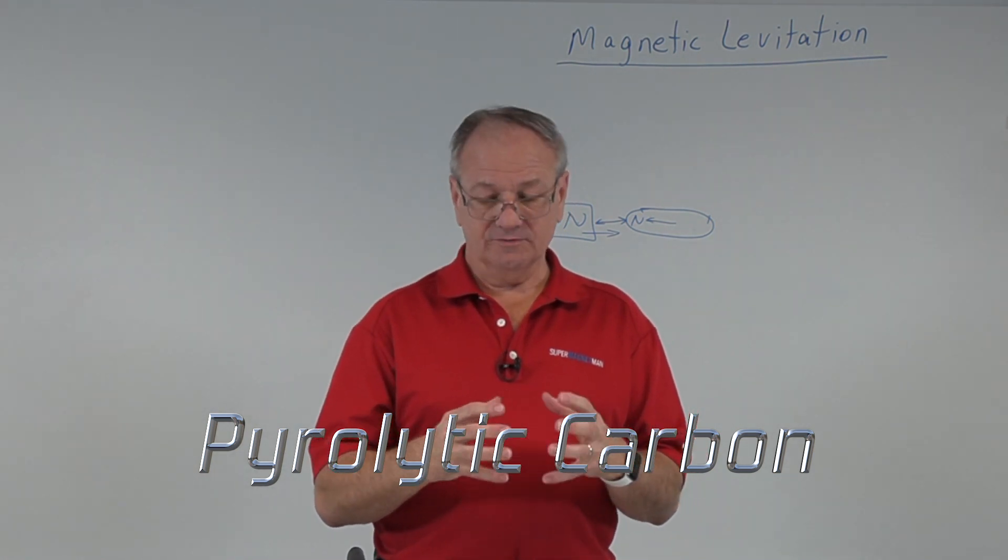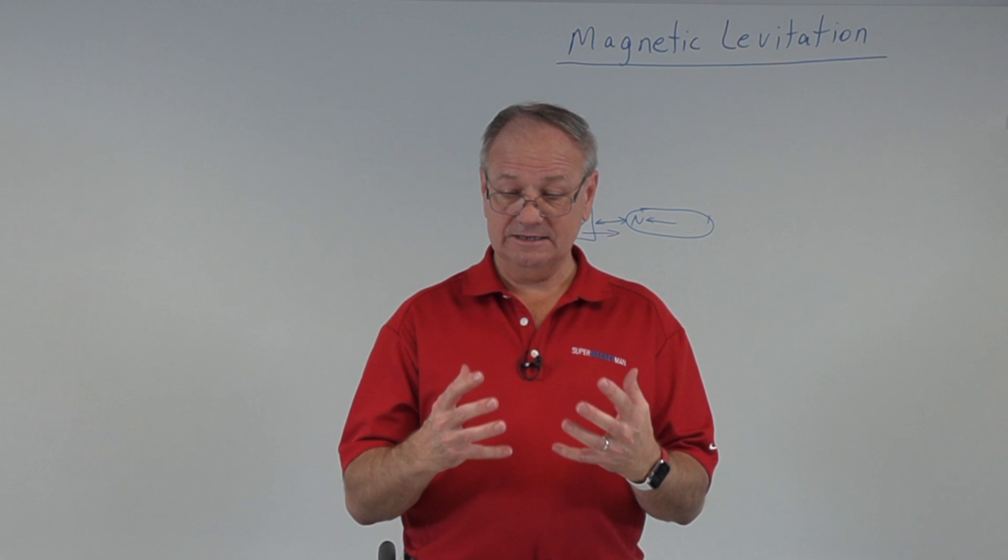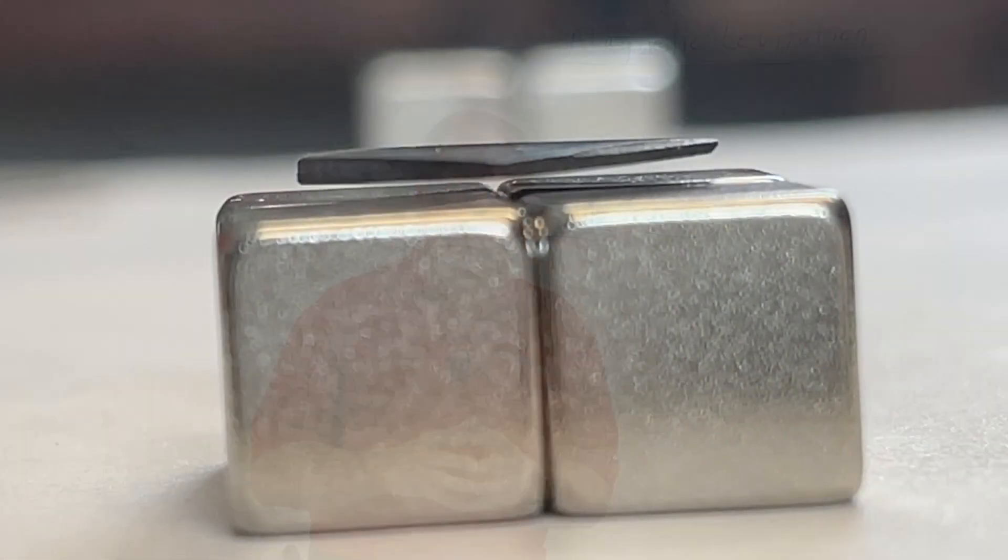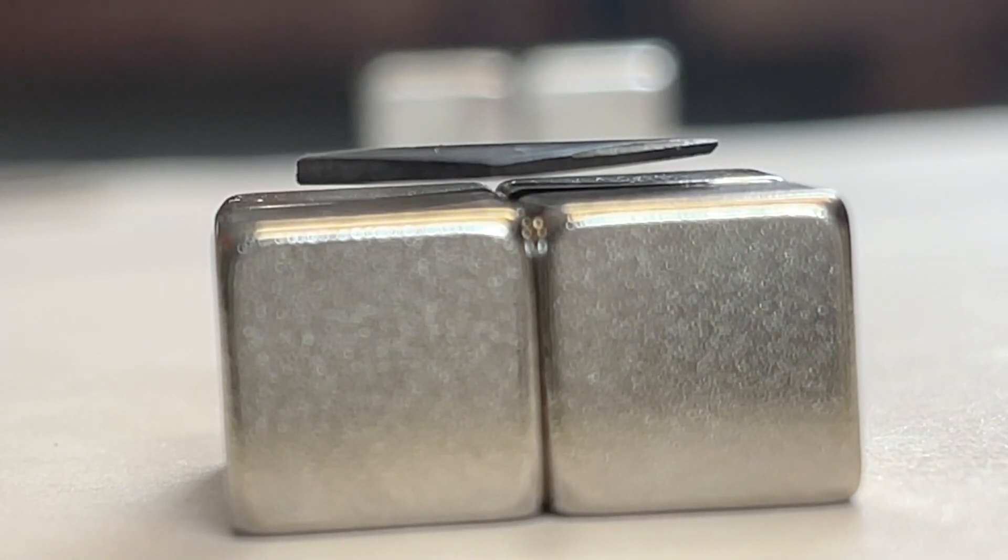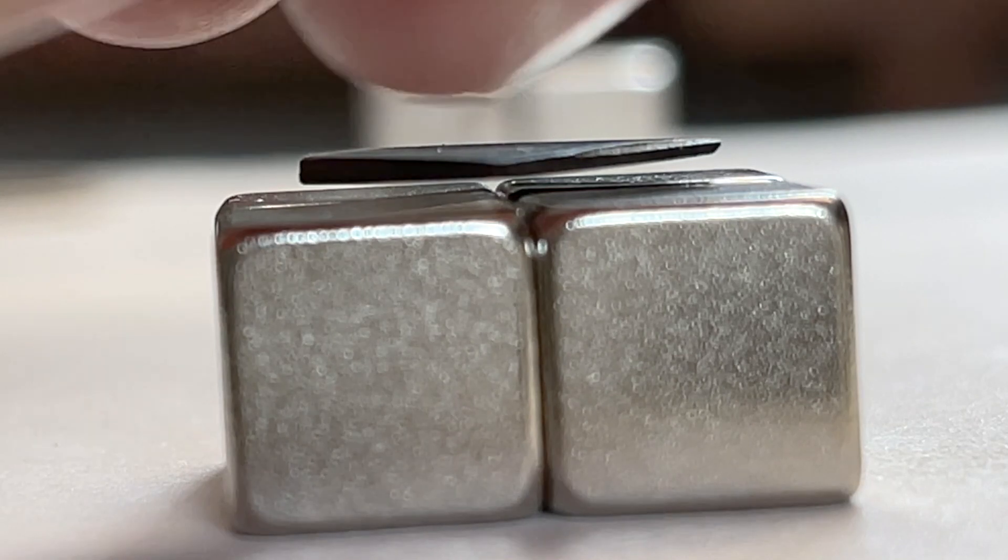We're going to start by looking at pyrolytic graphite. It's a very special type of pyrolytic carbon, made in a very special way that gives it this tremendous field. The 10 millimeter cubes, these are N40, and the surface gauss is around 5,000, 5,100 on these.